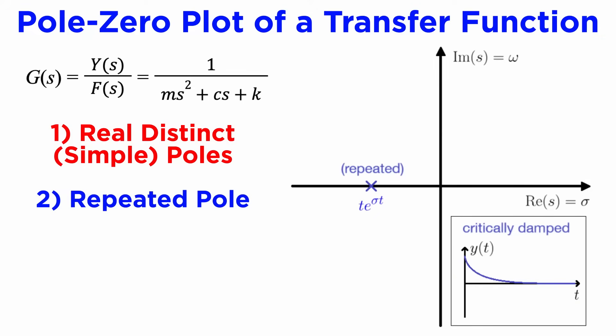If we have a single repeated real pole, this corresponds to a critically damped system, which again will be stable if it is in the left half plane only.